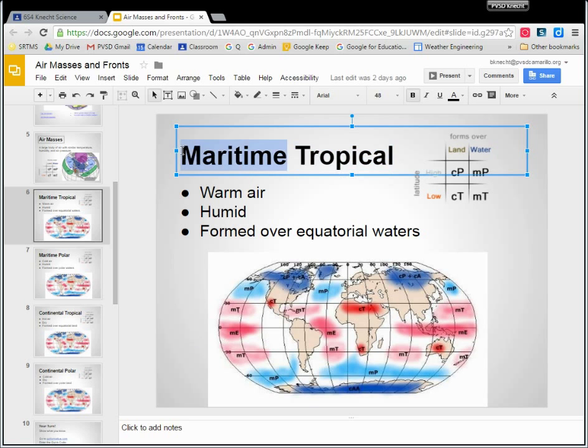Maritime is a really cool word, which means things to do with the ocean, things to do with water. So maritime tropical means it's a blob of air that's over warm water. There we go.